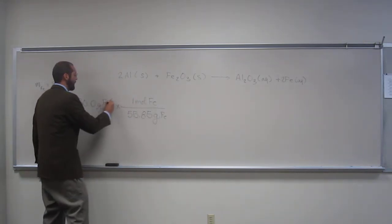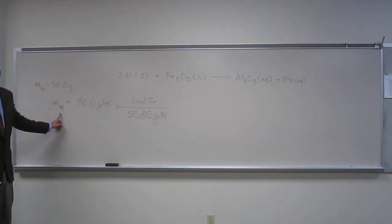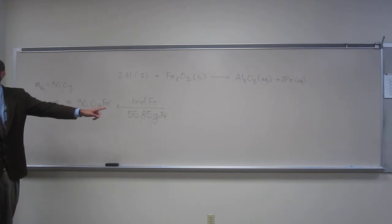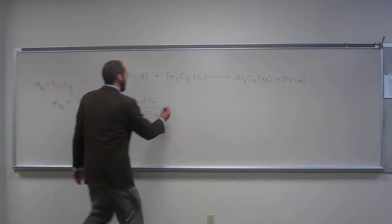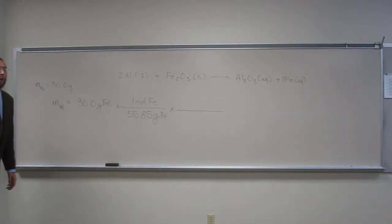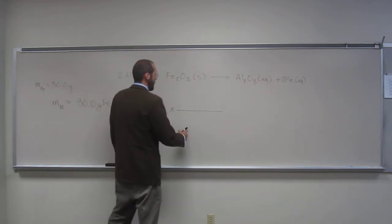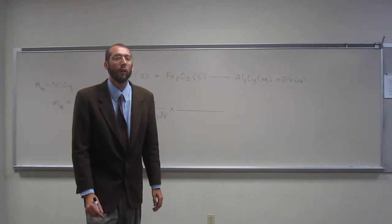So, now we've canceled out grams of iron. But remember, we're looking for mass of aluminum. So have we gotten that yet? So what are we going to do now? Mole to mole. So figure out the moles of aluminum, right? So what's the mole to mole ratio here?